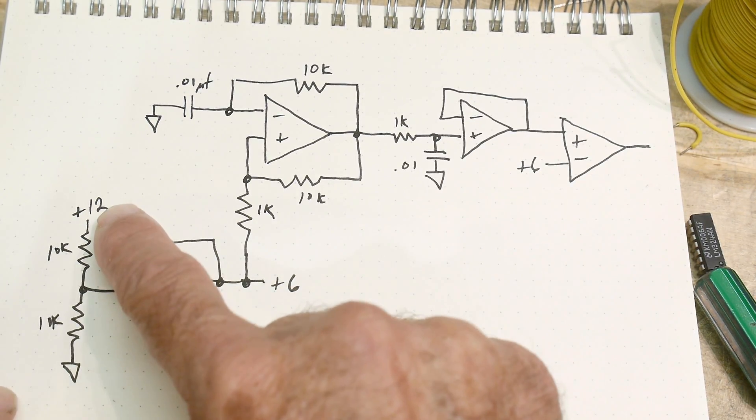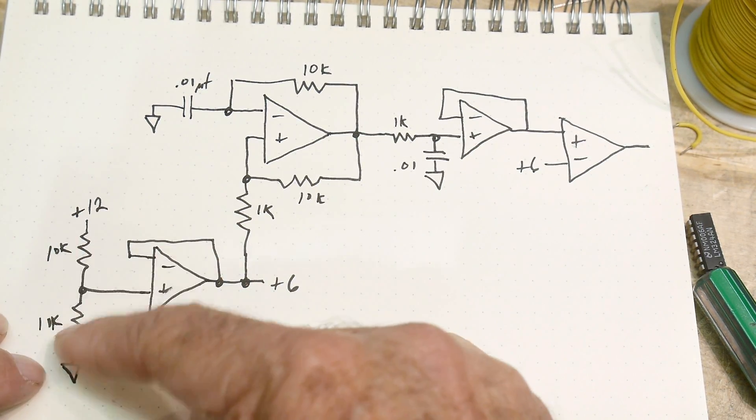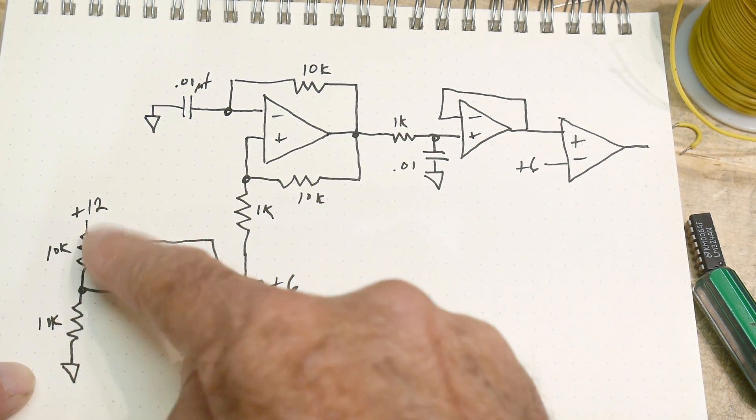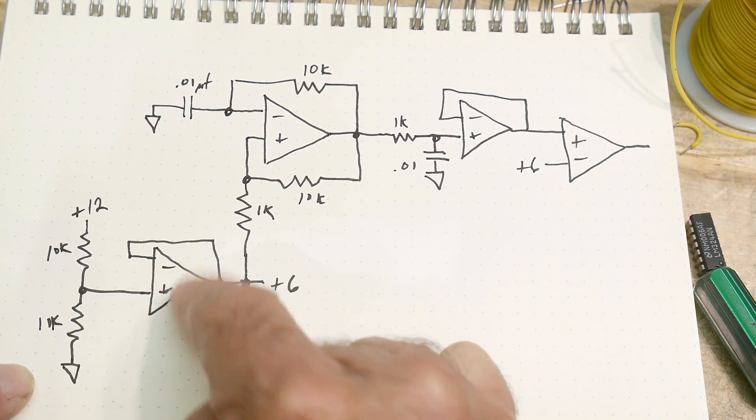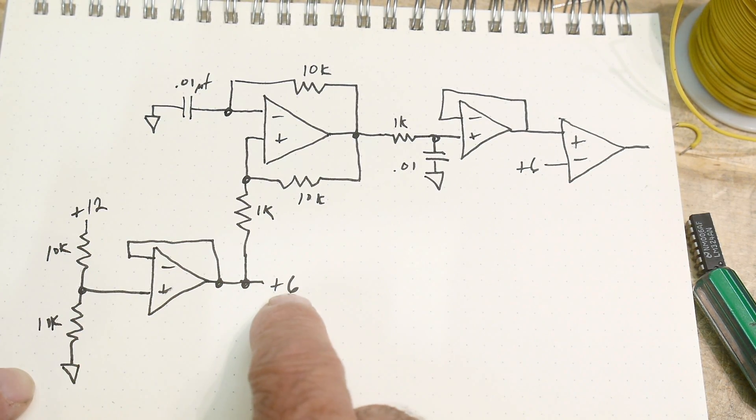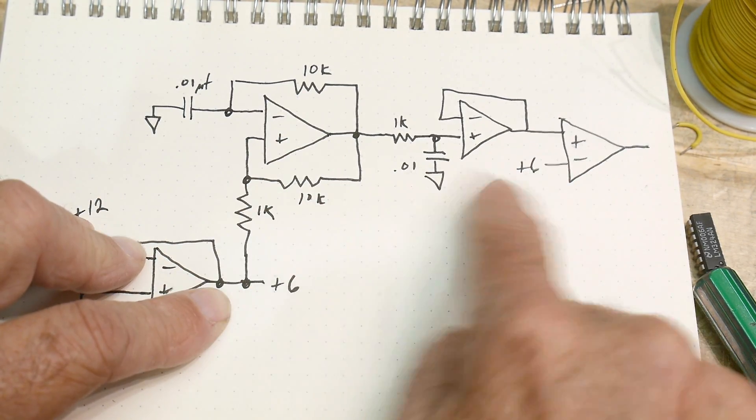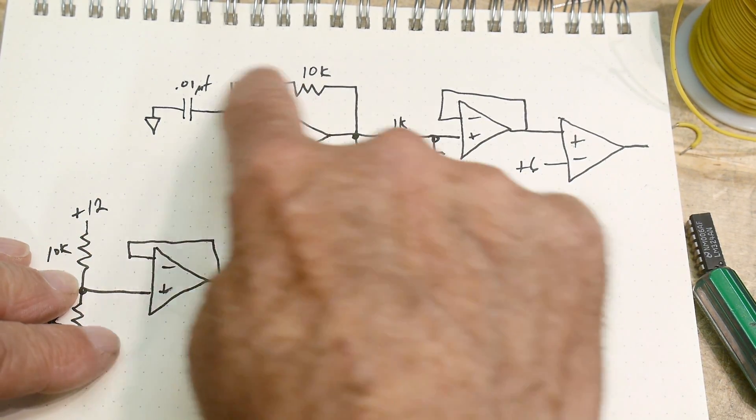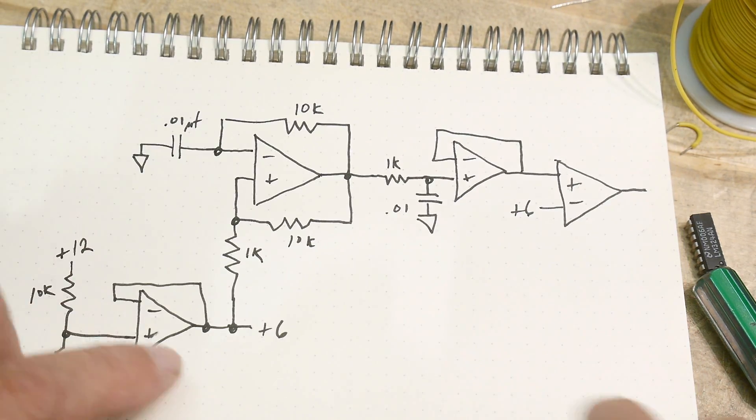What we're going to do is take our full voltage, ground and 12, split it in half, and then buffer it so we have a nice stiff 6 volts. We're going to use that in two places here. This first section is an oscillator.